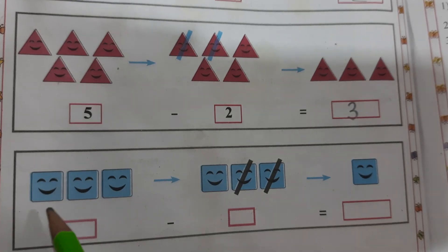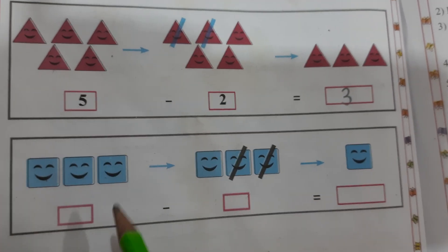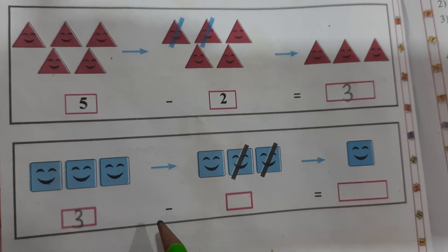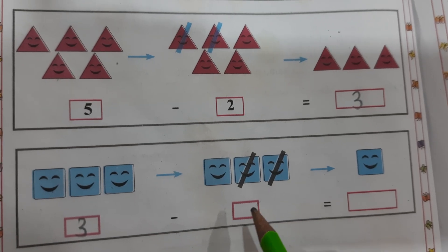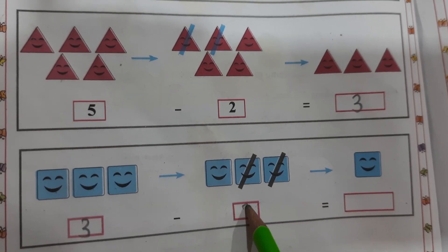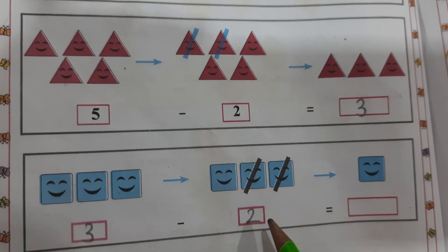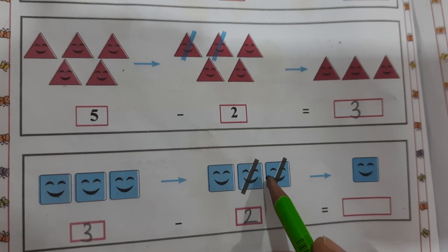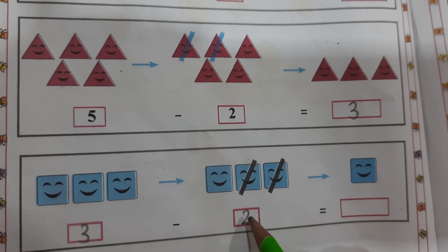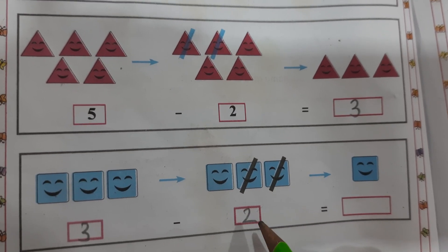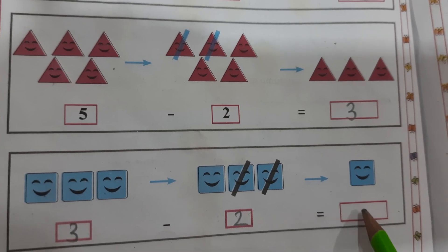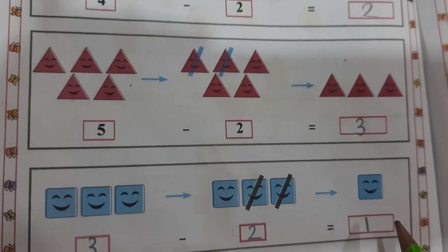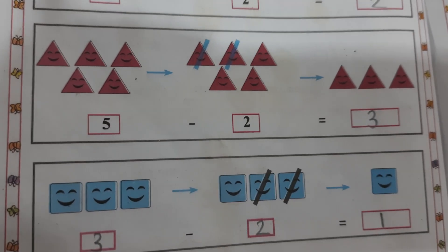Next. 1, 2, 3. 3 minus 2. 3 minus 2. Cut 2. So, here is 2, is equal to 1. How many remaining? 1. Thank you.